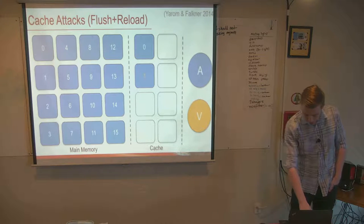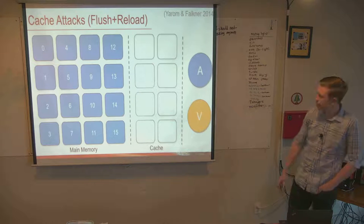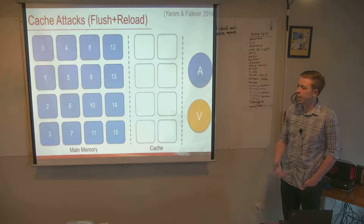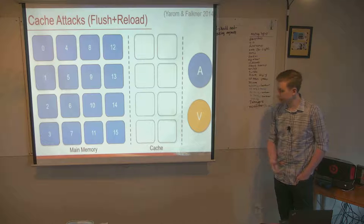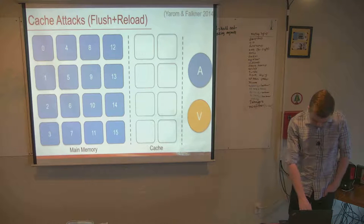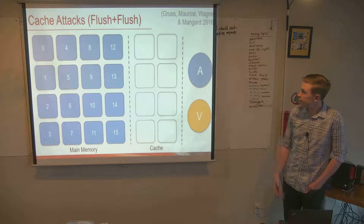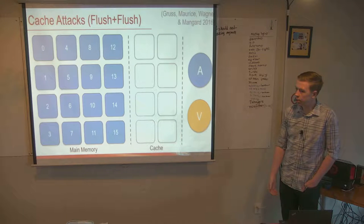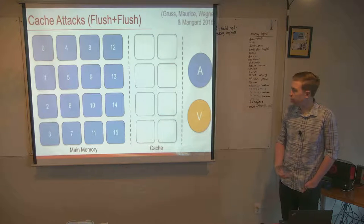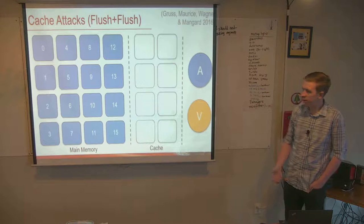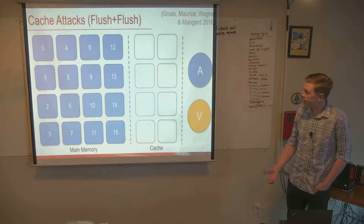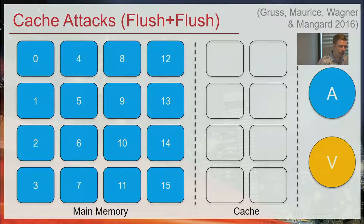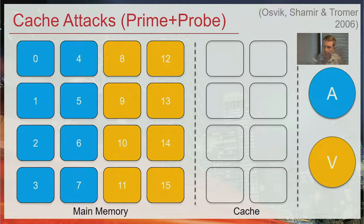Then the attack repeats: the attacker flushes again, lets the victim execute for a small period of time, and then reloads to see which other addresses the victim is accessing. There's also an extension called flush and flush, where instead of measuring the time to reload memory, the attacker measures the time to flush it — but it's essentially the same thing. When the attacker and victim share memory, the attacker can see which addresses the victim is accessing.